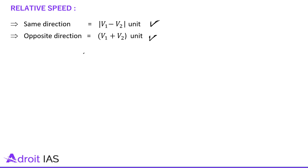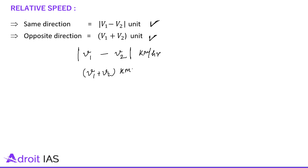So if the speed of one vehicle is v1 and the speed of another vehicle is v2, then when they are moving in the same direction, the relative speed will be v1 minus v2 km per hour. And when they are moving in opposite directions, the relative speed will be v1 plus v2 km per hour. This is the relative speed concept we are going to use in our questions.